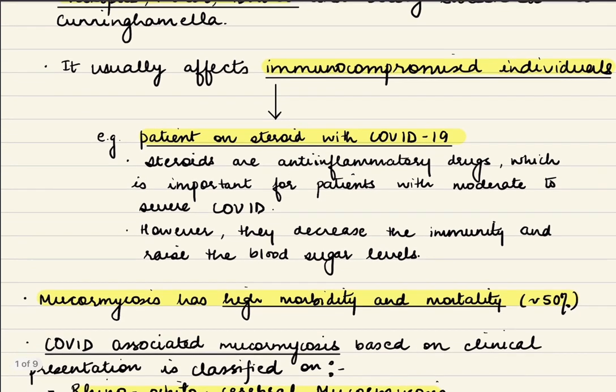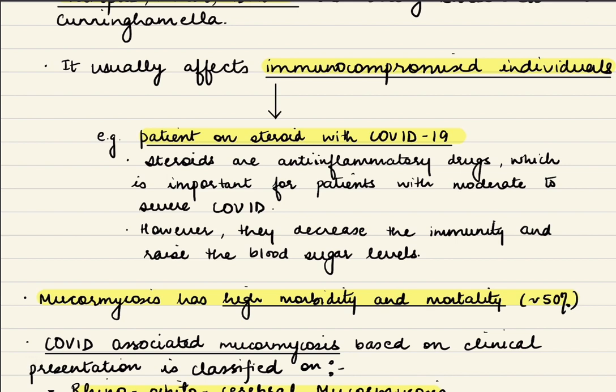For example, a patient with COVID-19 who is on steroids. In COVID-19 the body's immune system goes into overdrive, and to prevent this we give anti-inflammatory drugs such as steroids. These are very important to prevent complications, but giving steroids decreases immunity and raises blood sugar levels. As a result, opportunistic infections like mucormycosis can occur.